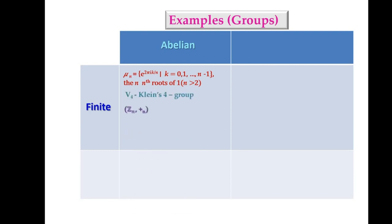Klein's 4-group, collection of all congruence classes modulo n under addition modulo n and collection of all reduced residue classes modulo n under multiplication modulo n,